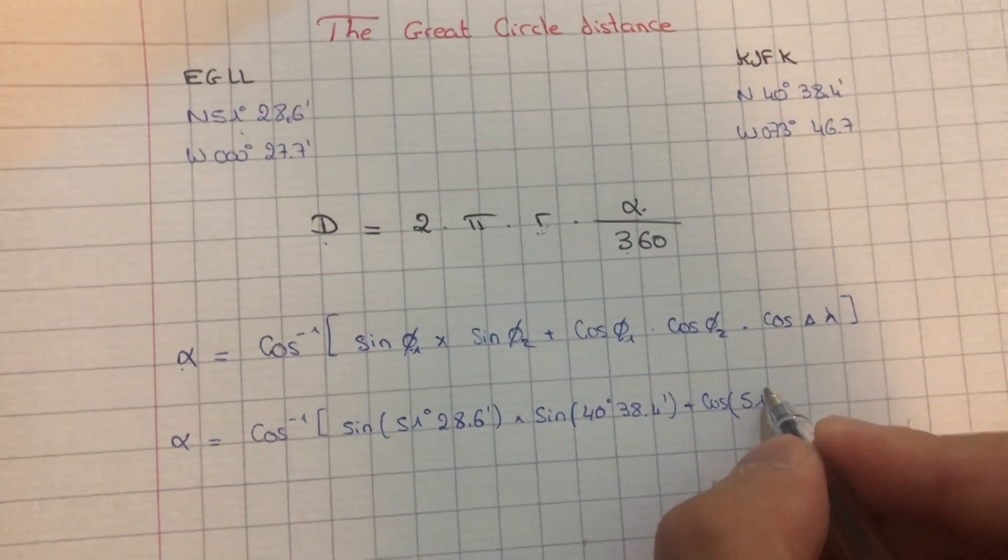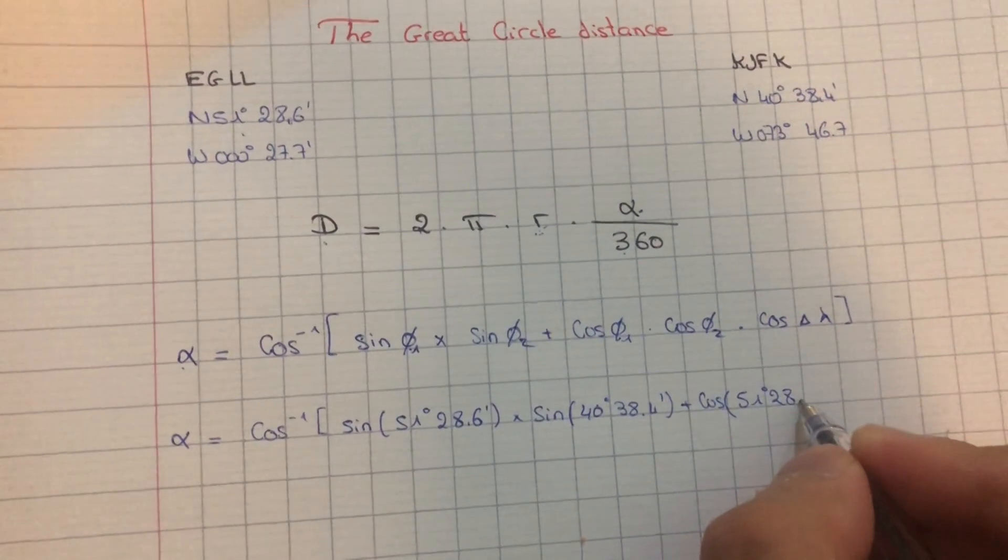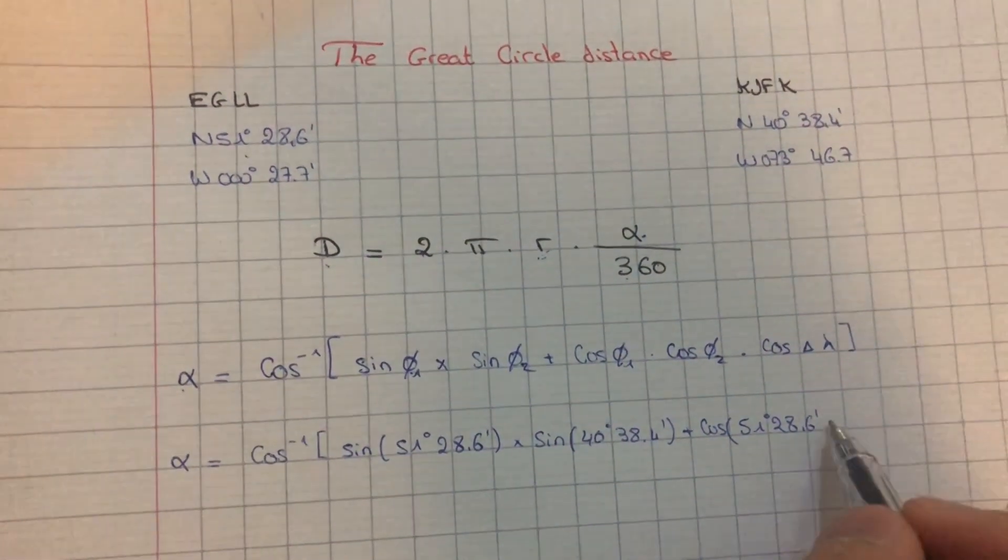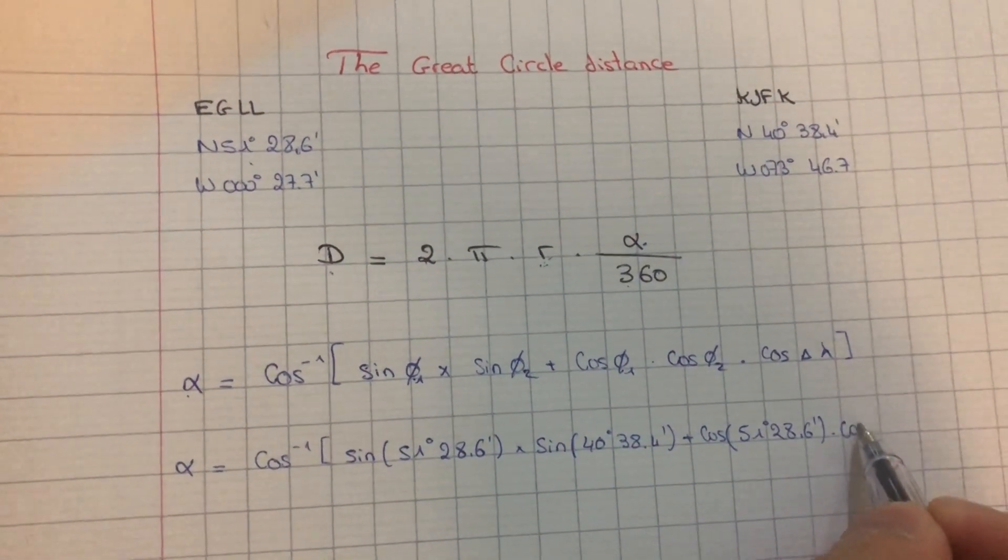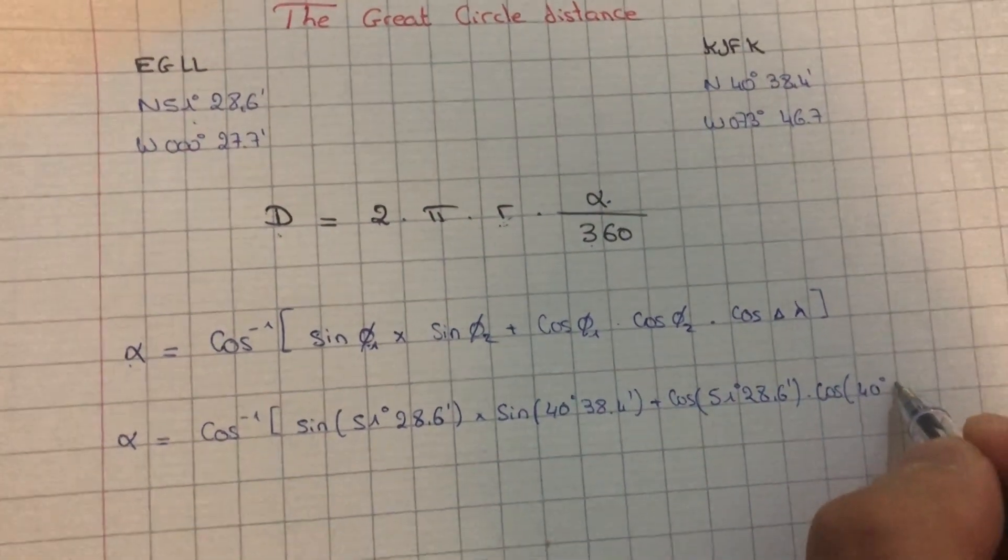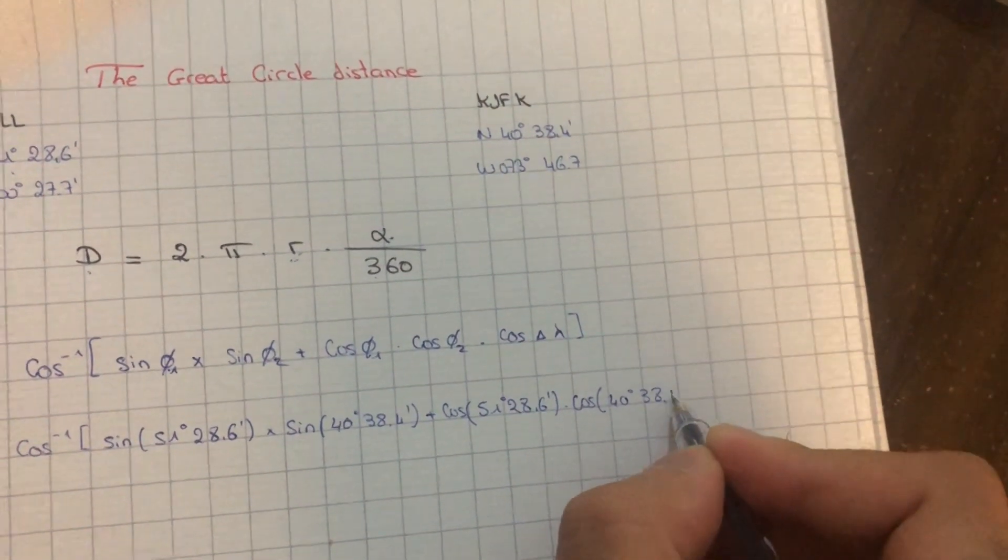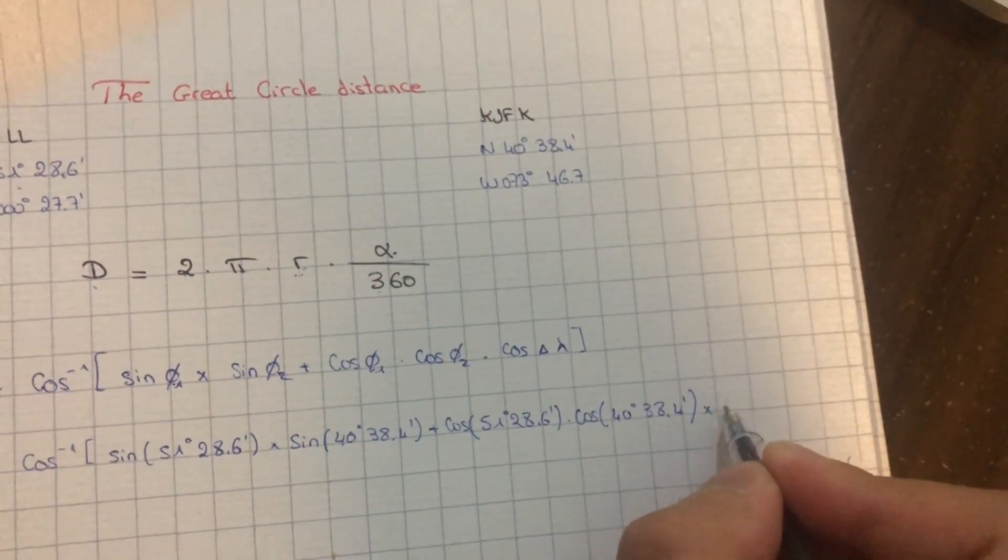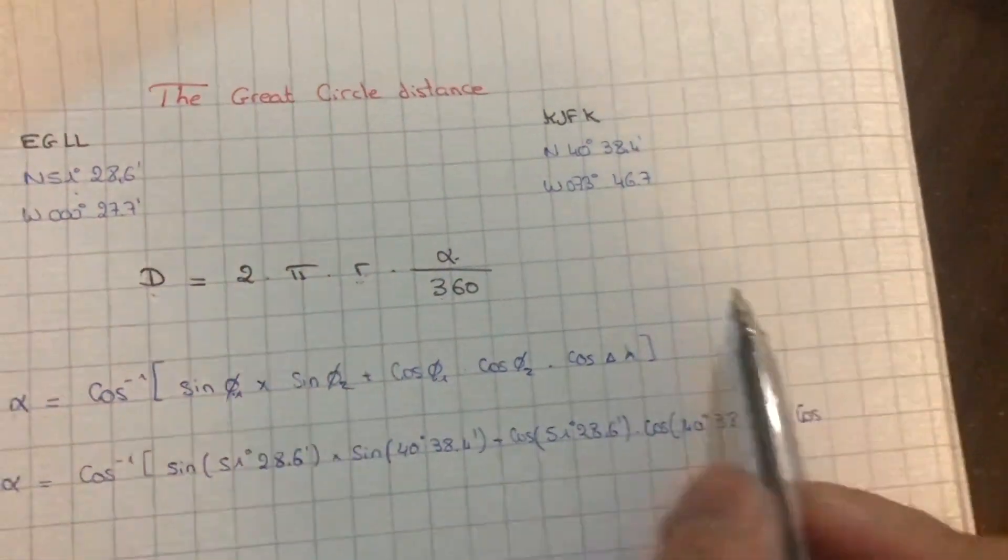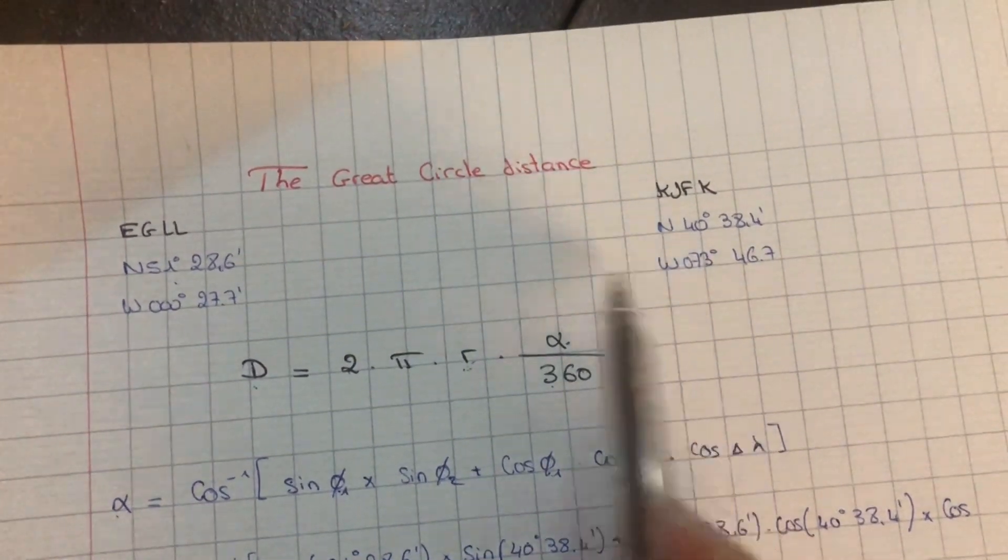times cosine 40 degrees 38.4 minutes, times cosine of the difference between these two latitudes—sorry, longitudes.